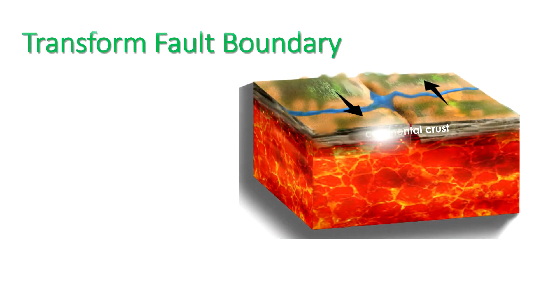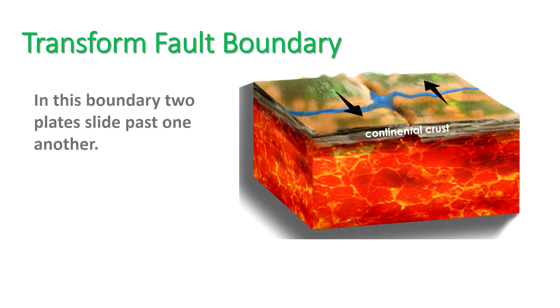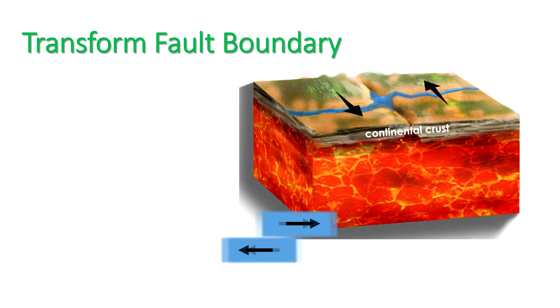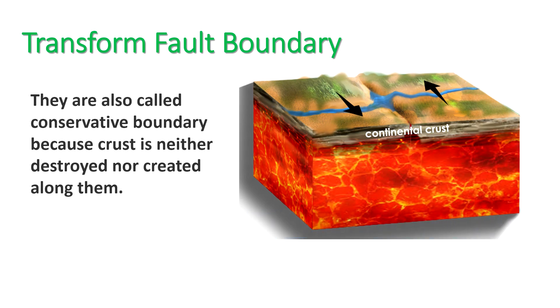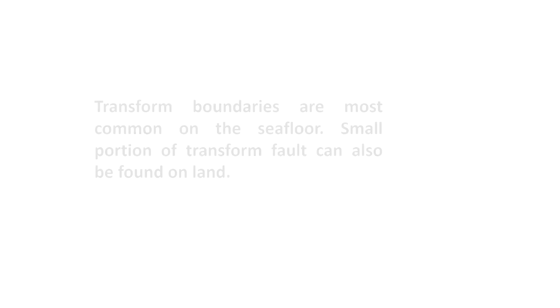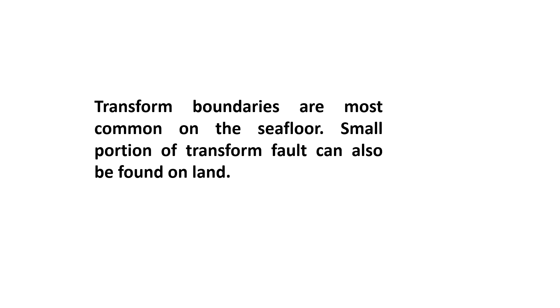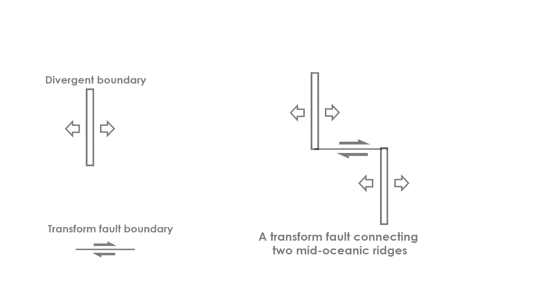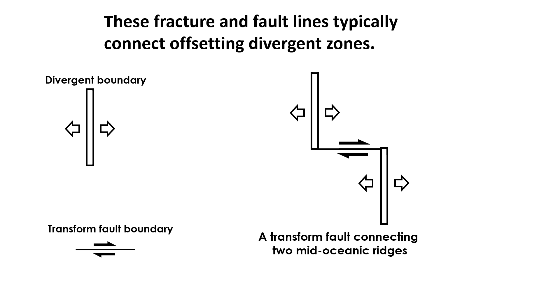Transform fault boundary is a boundary where two plates slide past one another. They are also called conservative boundaries because crust is neither destroyed nor created along them. Transform boundaries are most common on the seafloor, where they form oceanic fracture zones — an example is the mid-Atlantic ridge. When they occur on land, they produce faults. This diagram shows how the fracture and fault lines typically connect, offsetting divergent zones.